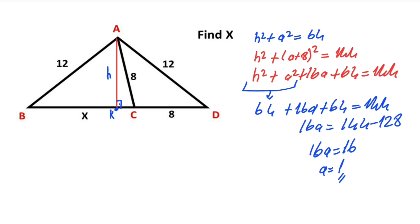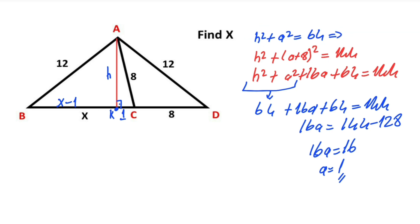Let's write here a equals 1. If a equals 1, that means the length of BK must be equal to x minus 1. Notice that h squared plus a squared equals 64. We have found a as 1 unit, that means h equals root 63. Let's write root 63 here.